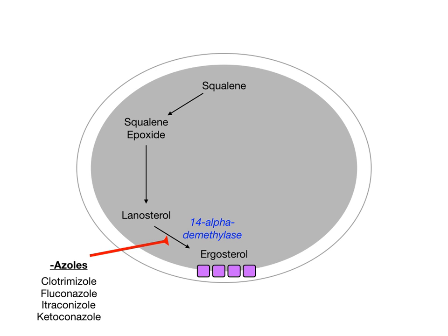The azoles inhibit 14-alpha-D-methylase. Now the step that converts squalene to squalene epoxide — the first step — is done by an enzyme called squalene epoxidase. There's one drug that inhibits this enzyme: terbinafine. Terbinafine will basically do the same thing that the azoles do; it just does it upstream.